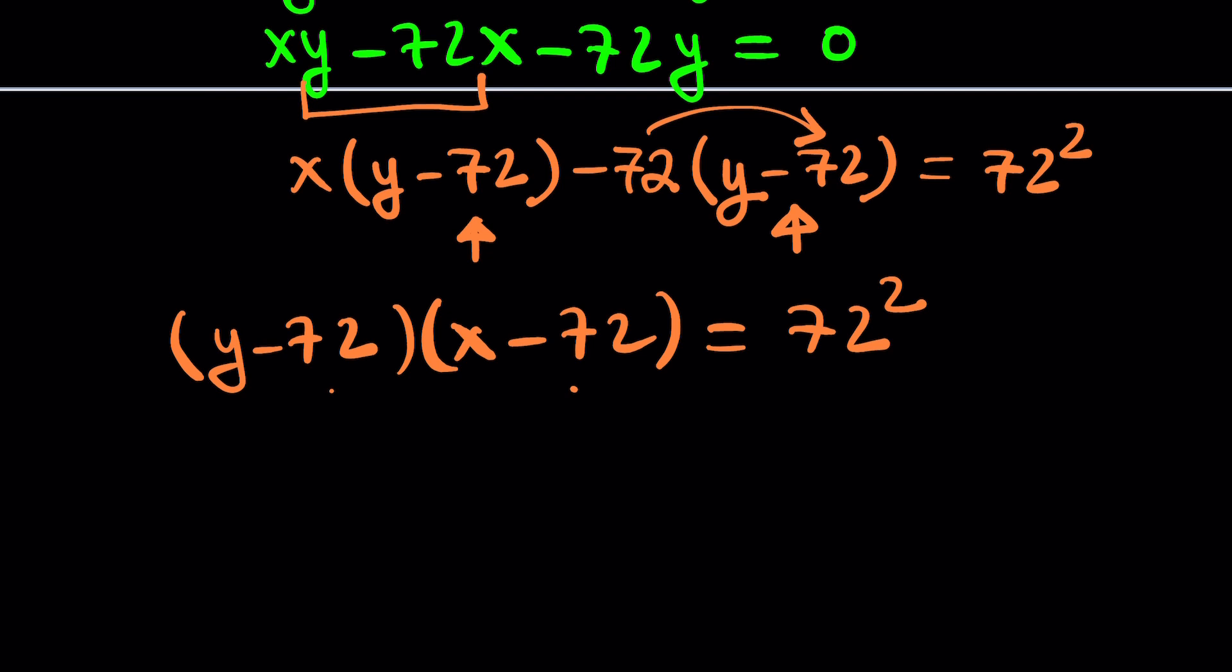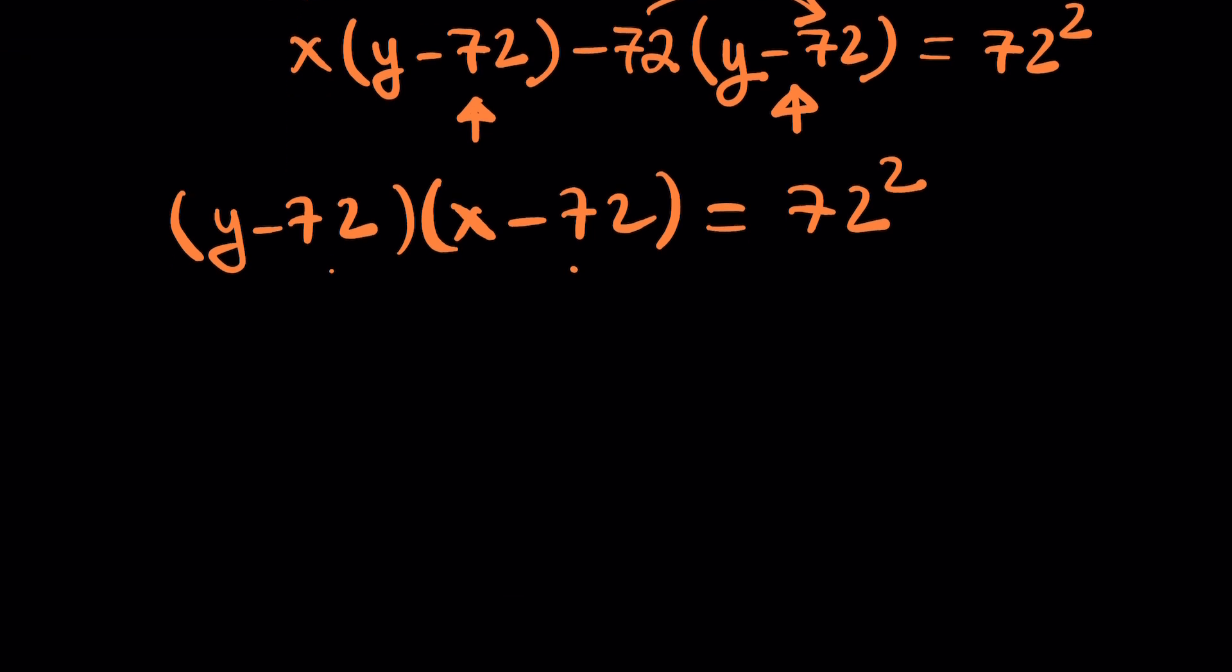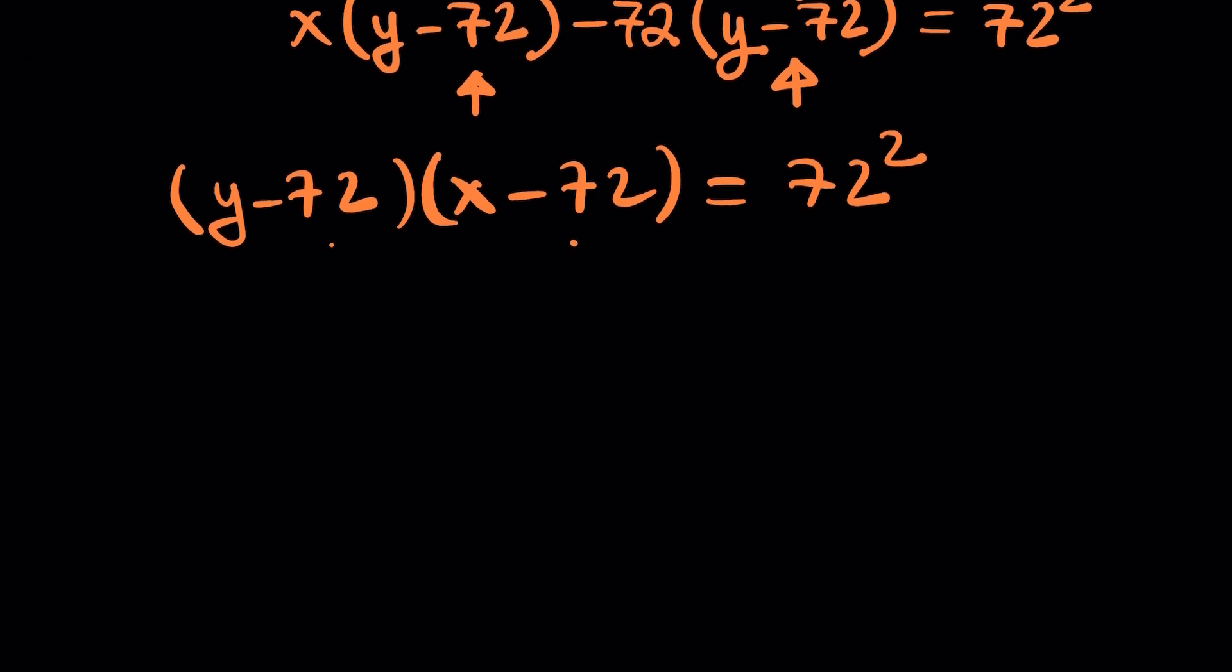So can we find two integers whose product is an integer? Absolutely. That's called factoring. How do you factor 72 squared? There are so many ways to do it. For example, one way to do it is 72 and 72 because 72 times 72 is 72 squared.